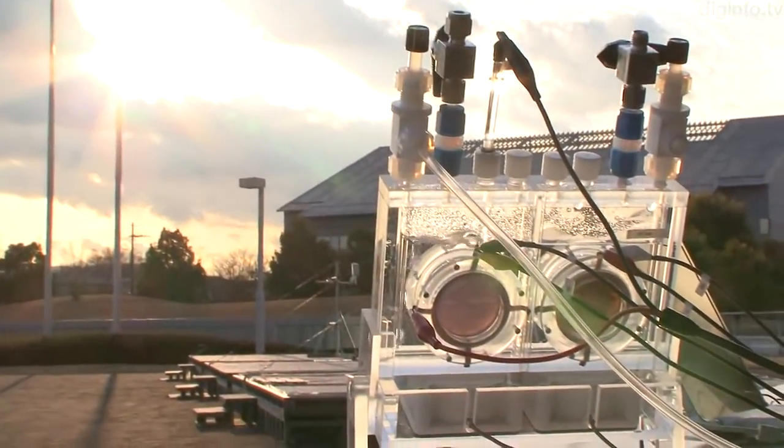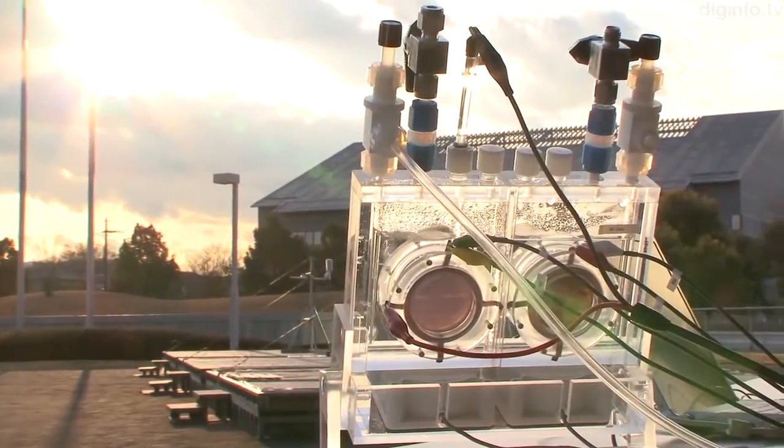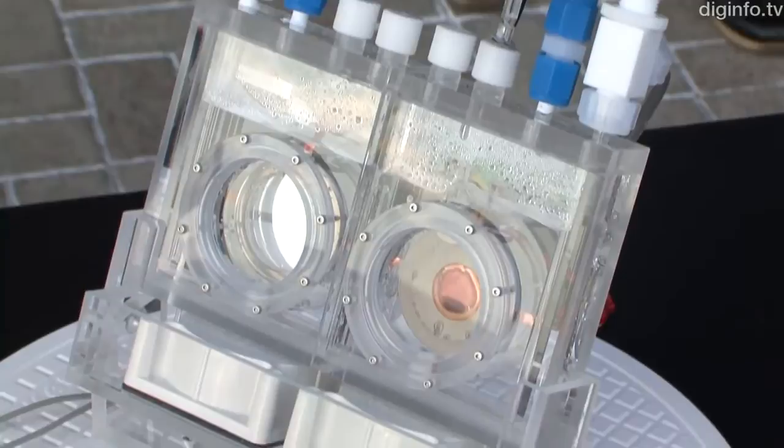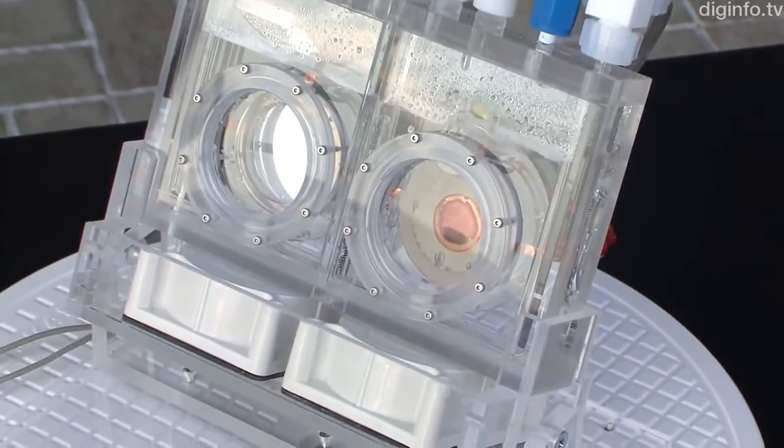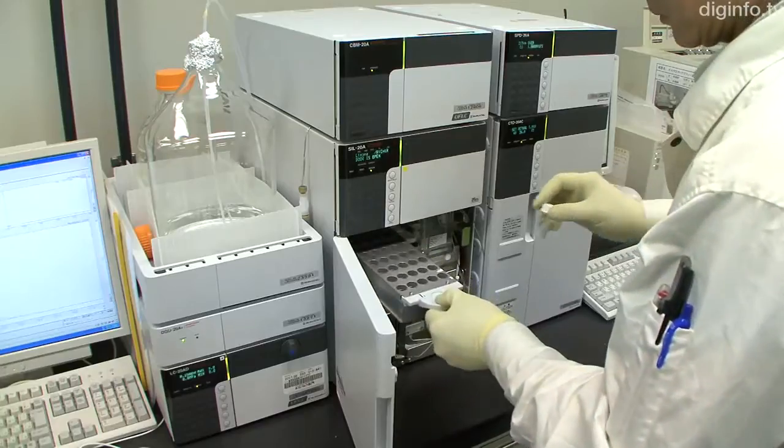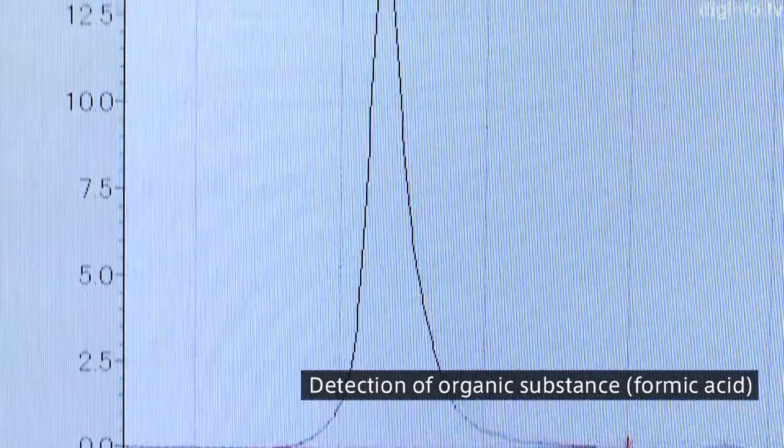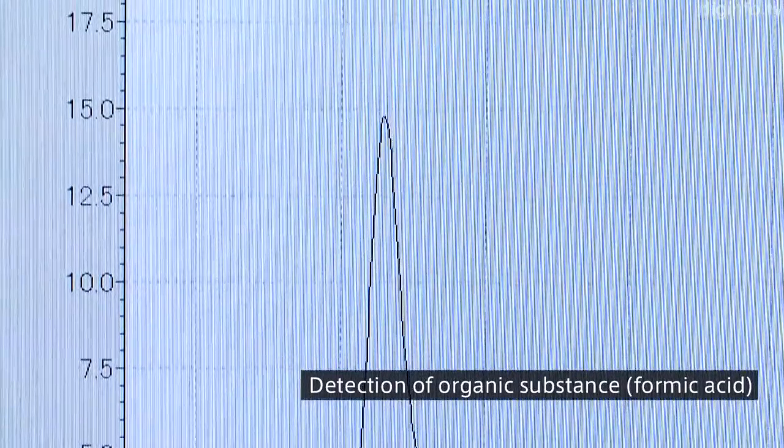A group at Panasonic has developed an artificial photosynthesis system which produces organic materials with a world-leading efficiency in terms of solar energy conversion. The recently achieved efficiency, 0.2%, is on a par with that for real plants used in biomass energy.